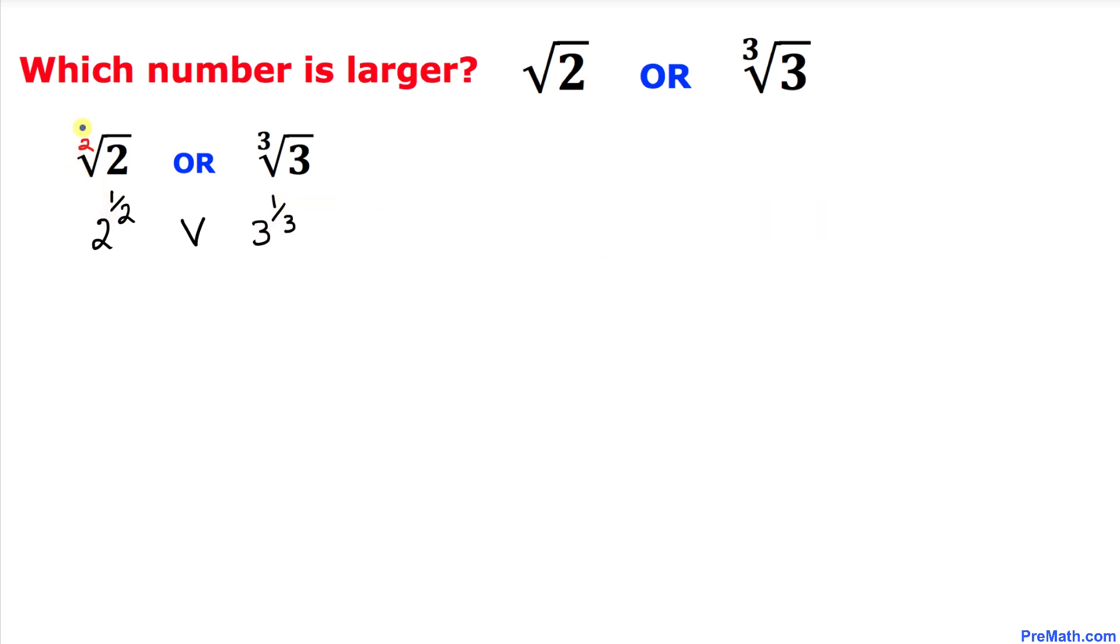we go any further, let's focus on these indices. This index is 2 over here and the index over here is 3. So the least common denominator, or sometimes we call it LCM, of those numbers 2 and 3 is